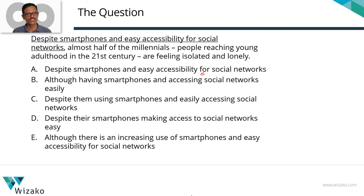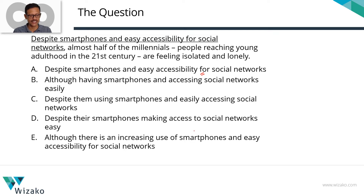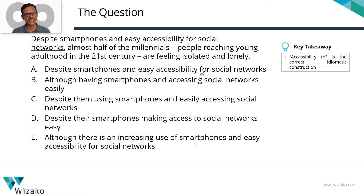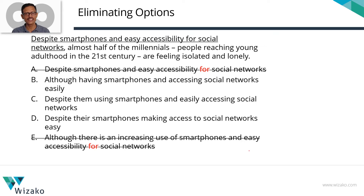Let's run through the five choices to check whether any answer option has 'accessibility for,' and if so, eliminate it. Choice A has 'accessibility for.' In B, we have 'accessing social networks,' so 'for' doesn't come into the picture. Same holds for C. Choice D has 'access to social networks' — the right usage. Choice E has 'accessibility for social networks.' So we eliminate A and E. Accessibility to is the correct idiomatic usage for this context — 40% done, three choices left.